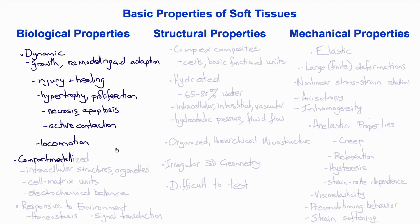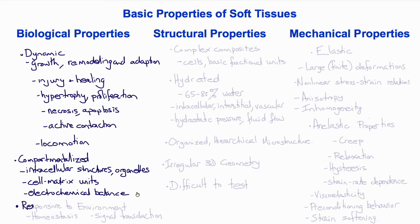Tissues are also compartmentalized. They have intracellular structures and organelles. They're organized into cell matrix units, such as alveoli in the lung. They maintain electrochemical balance. And finally, tissues being living are responsive to the environment. The principle of homeostasis applies and they have signal transduction mechanisms to detect and respond to changes in their external environment.